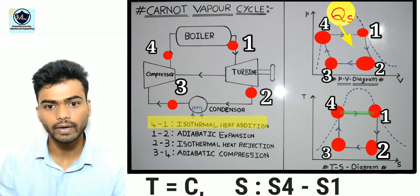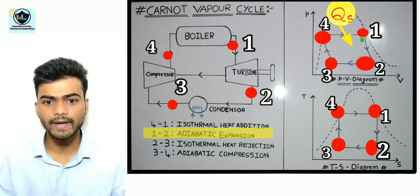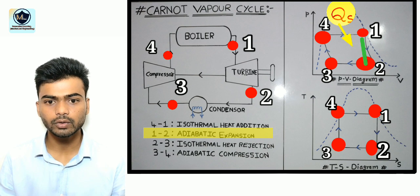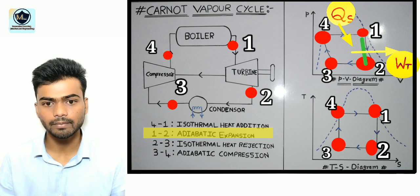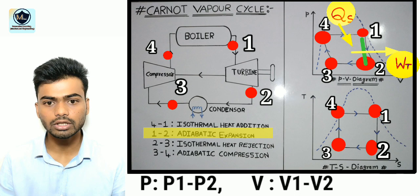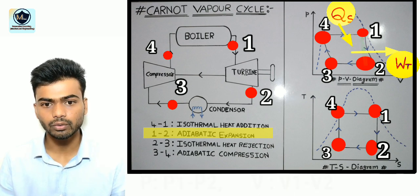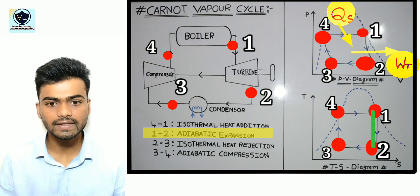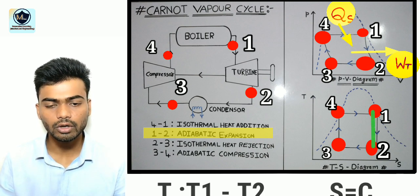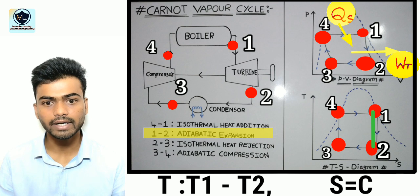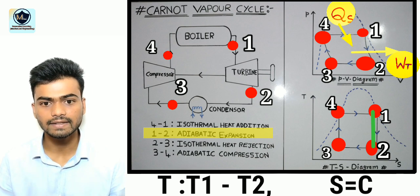In adiabatic expansion process that is 1 to 2 steam expands through the blades of the turbine. The work is obtained from the system that is turbine work. Here pressure falls from p1 to p2 and volume changes from v1 to v2. Moving on to the TS diagram here temperature falls from t1 to t2 but entropy remains constant. It is an isentropic process means constant entropy process so s1 is equals to s2.